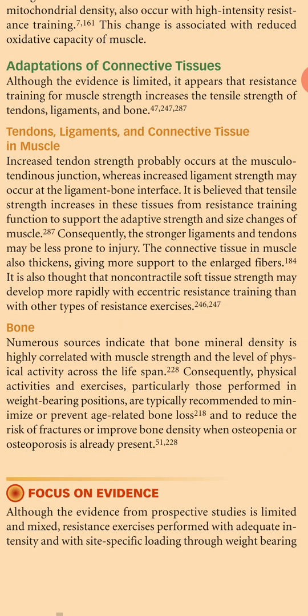Adaptation of Connective Tissue. Although the evidence is limited, it appears that resistance training for muscle strength increases the tensile strength of tendons, ligaments, and bones. Increased tendon strength probably occurs at the musculotendinous junction, whereas increased ligament strength may occur at the ligament-bone interface. It is believed that tensile strength increases in these tissues from resistance training function to support the adaptive strength and size changes of muscle. Consequently, the stronger ligaments and tendons may be less prone to injury.